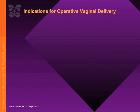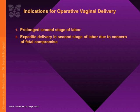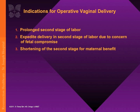The indications for operative vaginal delivery include a prolonged second stage of labor, to expedite delivery in the second stage due to concern of fetal compromise such as a non-reassuring fetal tracing, or shortening of the second stage for maternal exhaustion or presence of maternal cardiac disease.